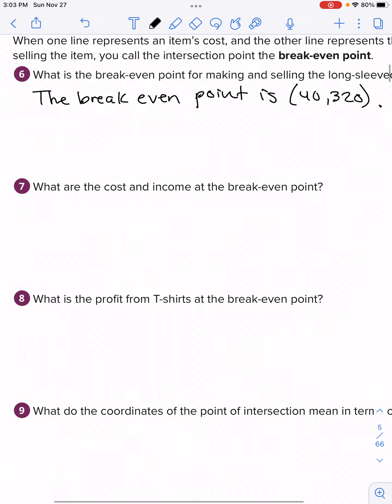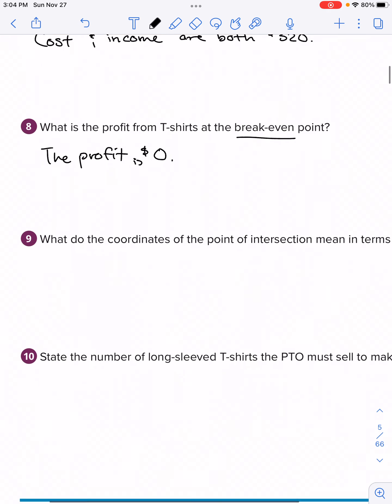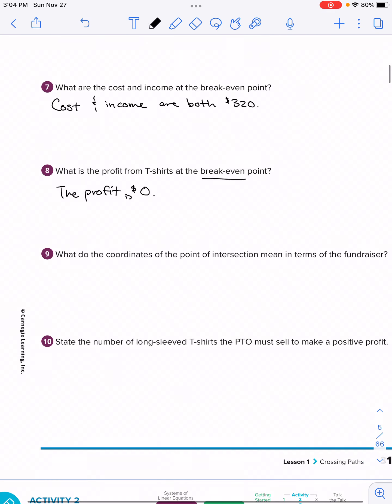What are the costs and income at the break-even point? The costs and income for us to buy the shirts and then the income from selling the shirts are both $320. What is the profit from the t-shirts at the break-even point? The break-even point is where we go from negative to positive. So what's in between negative to positive? If you think of a number line, from negative to positive, the number that's in between is zero. So the profit is zero dollars at the break-even point.